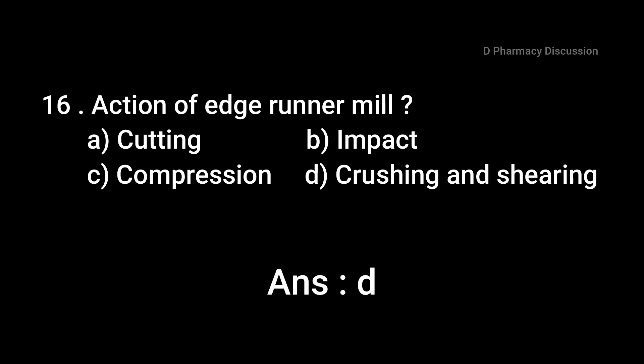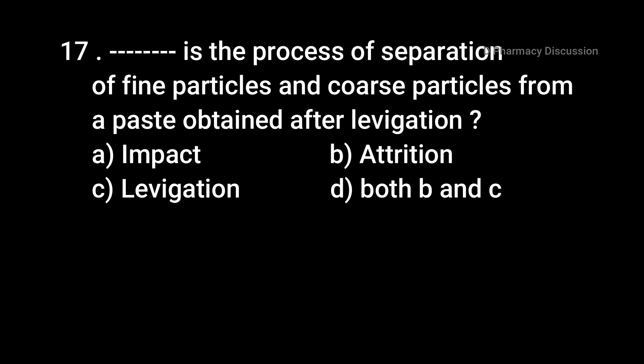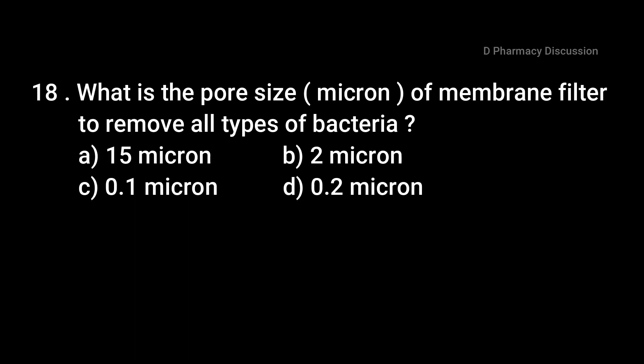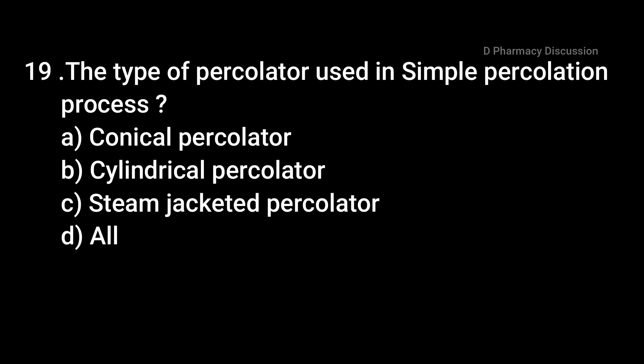Question 17: Dash is the process of separation of fine particles and coarse particles from a paste obtained after levigation. Option A: impact, B: attrition, C: elutriation, Option D: both B and C. Correct answer is Option C, elutriation. Question 18: What is the pore size of membrane filter to remove all types of bacteria? Option A: 15 micron, B: 2 micron, C: 0.1 micron, and Option D: 0.2 micron. Correct answer is Option D, 0.2 micron.